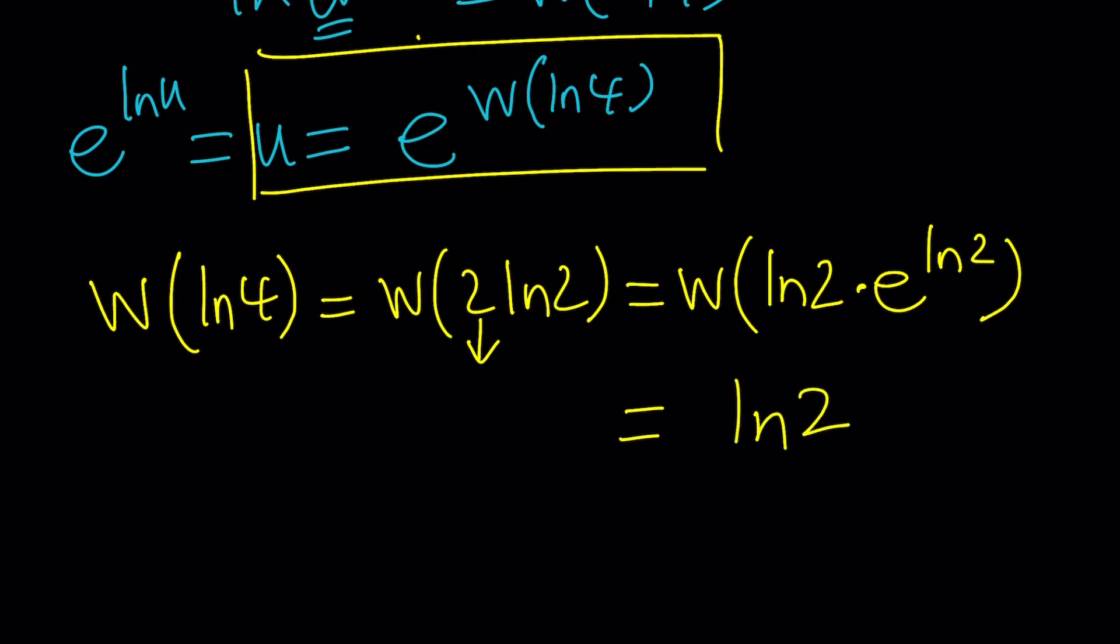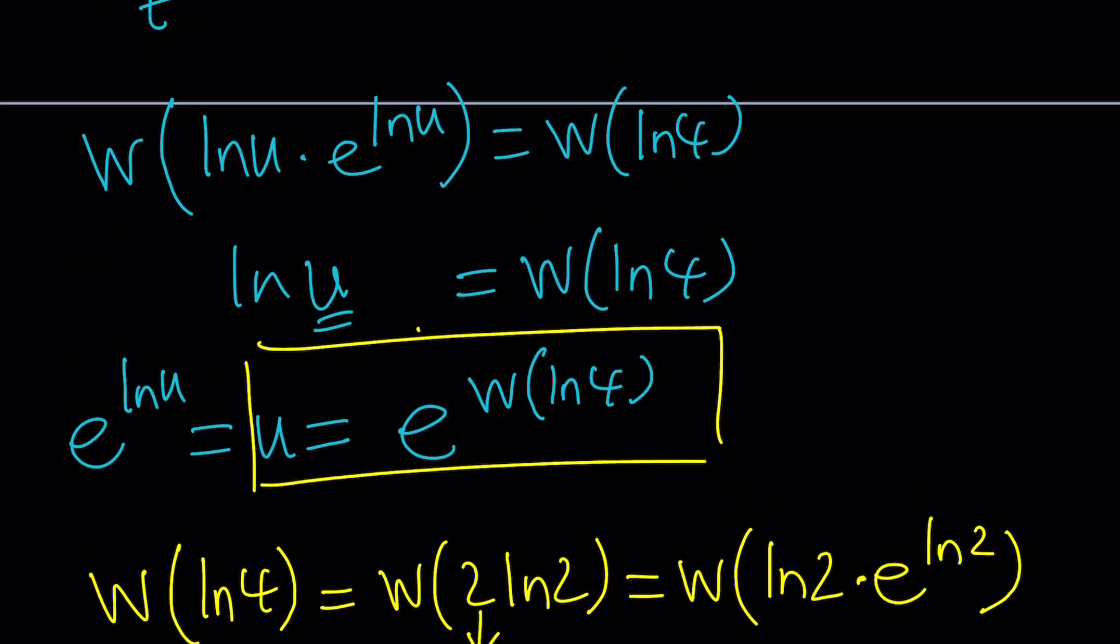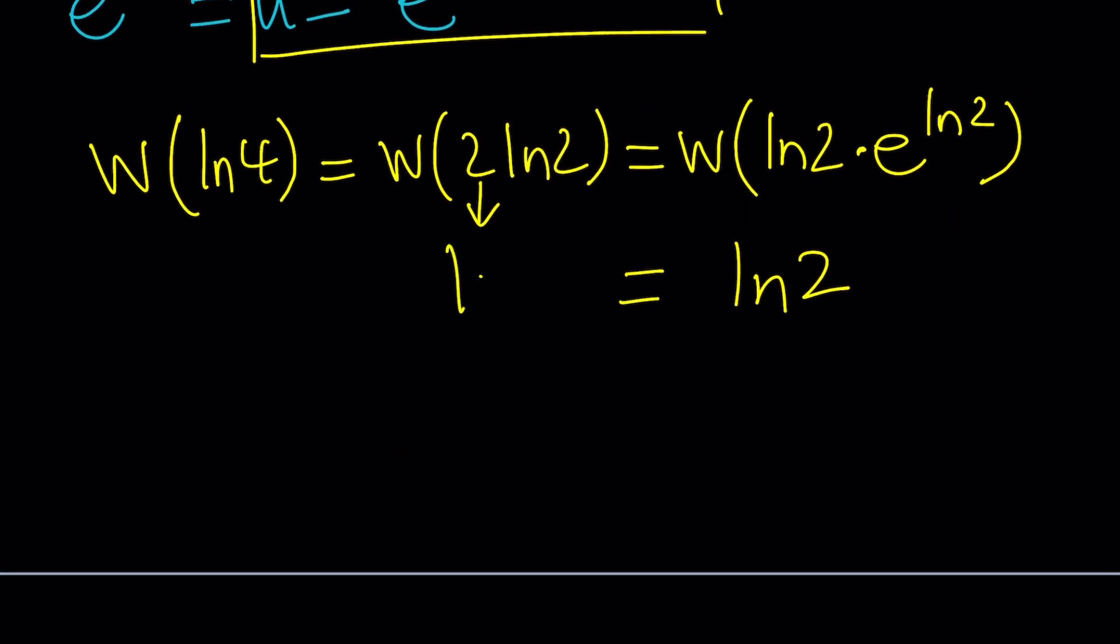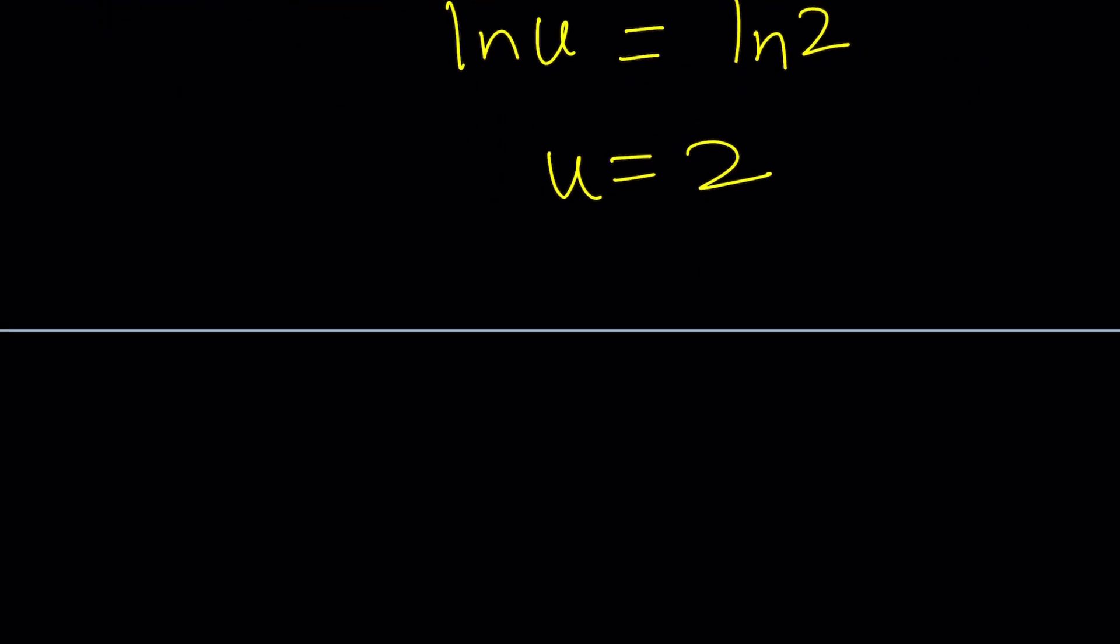But we have ln u on the left hand side. Where do I get that? This one. ln u is equal to w ln 4. So ln u equals ln 2, which implies u equals 2. But again, this doesn't tell me that u equals 2 is the only solution. And we're not even looking for u. I mean, we're looking for who? I don't know. We're looking for z. Now we're not looking for u. So don't worry about you.